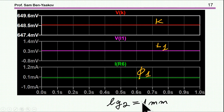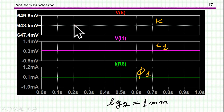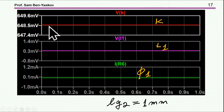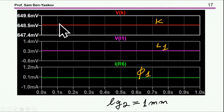If I change the middle gap to one millimeter, the leakage becomes larger because I'm allowing more flux to go through the middle section. Indeed, the coupling coefficient drops to 0.64, which is quite low.